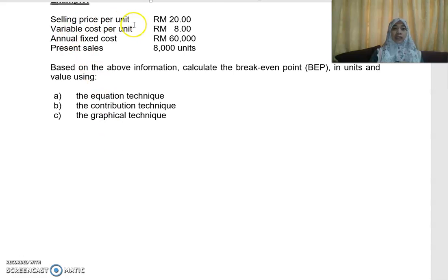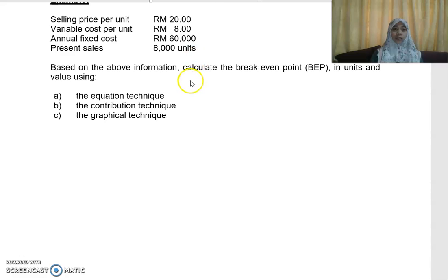In this example, the selling price per unit is 20, variable cost per unit is 8, and the annual fixed cost is 60,000. Currently we are producing and selling 8,000 units. In CVP analysis we assume that production equals sales — you produce 8,000 units and you sell 8,000 units as well.